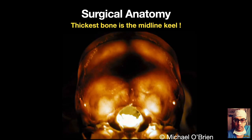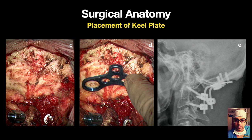If you shine a light inside the skull, the thickest portion of the occipital bone is around the external occipital protuberance. The area best suited for screws is this inverted triangular area below the superior nuchal line, closer to the midline crest. So your instrumentation is in an inverted triangle below the external occipital protuberance or the superior nuchal line.